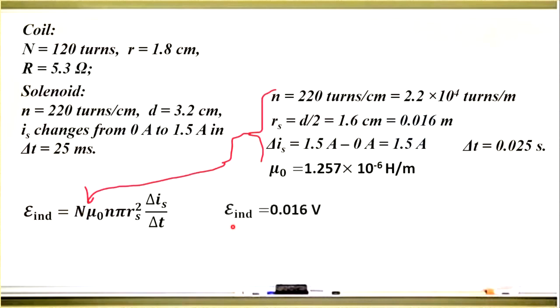Induced EMF equals 0.016 volts. Dividing by the resistance, which is 5.3 ohms, we get the final answer. The current is equal to 30 milliamps. The problem is solved completely.